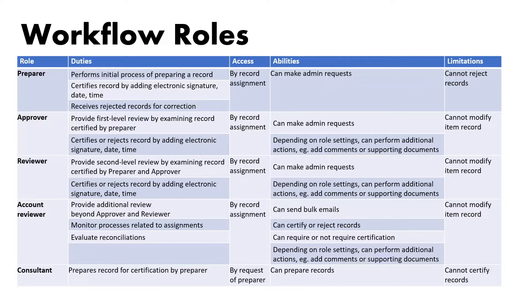Now let's understand what all these roles signify and what their actions and responsibilities are in Blackline. The three mandatory roles are preparer, approver, and reviewer. The preparer takes all the actions — for journal creation it creates the journal, for reconciliation it prepares the reconciliation, and for the task management module it initiates everything. Once the preparer completes its task, the workflow goes to the assigned approver, who does the first level examination. If everything is fine, it moves on to the reviewer. If the approver finds something wrong, it will reject and send it directly back to the preparer. There are also additional workflow reviewers — the account reviewer and the consultant — where the workflow can be routed for consultation or examination.